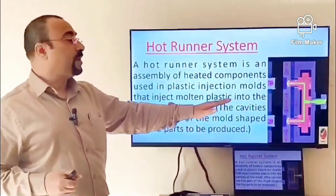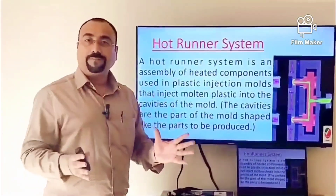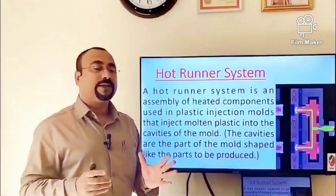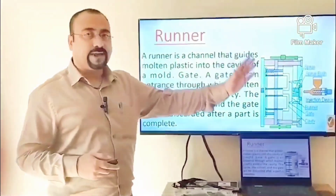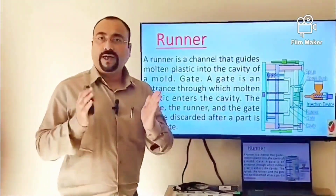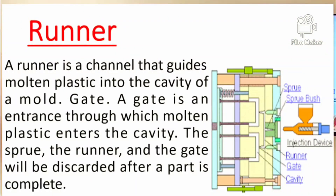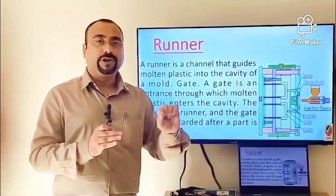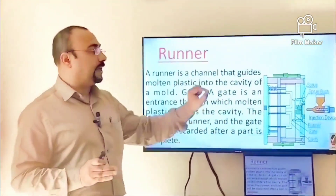The cavity, by definition — which I think all of you know — is the part of the mold that gives the shape of the parts you want to produce. The second term is runner. The runner is the channel through which molten plastic travels from the injection barrel to the cavity.